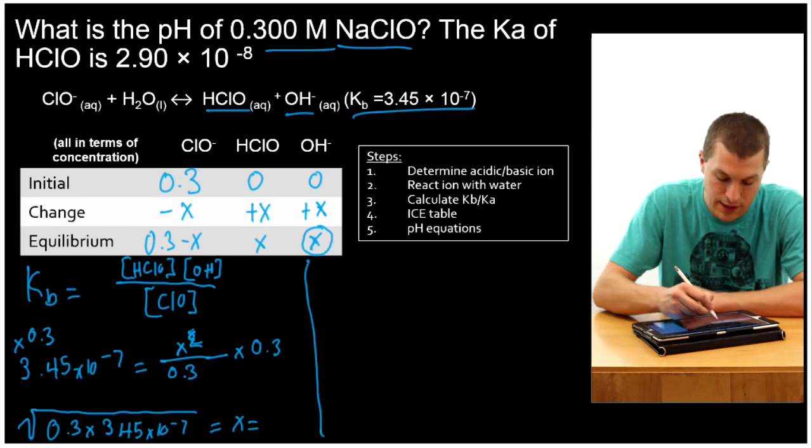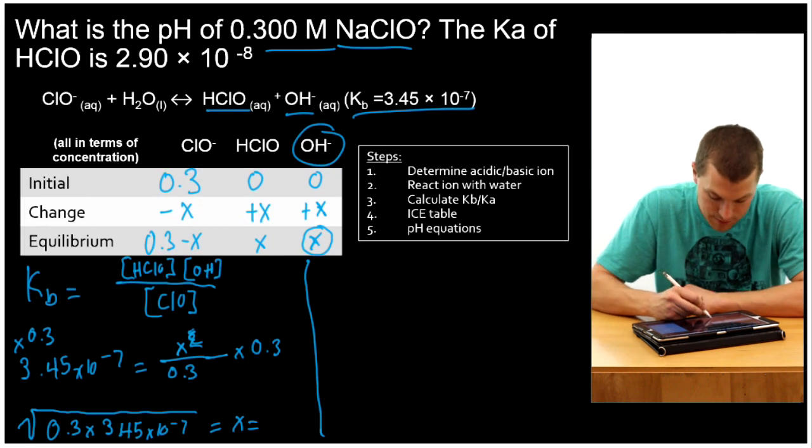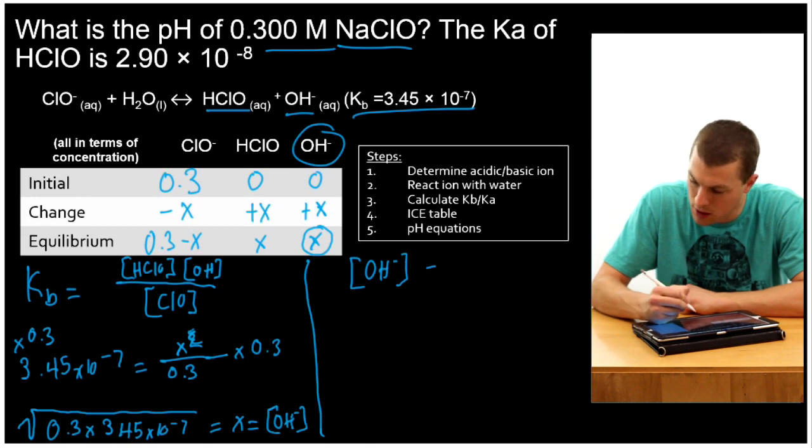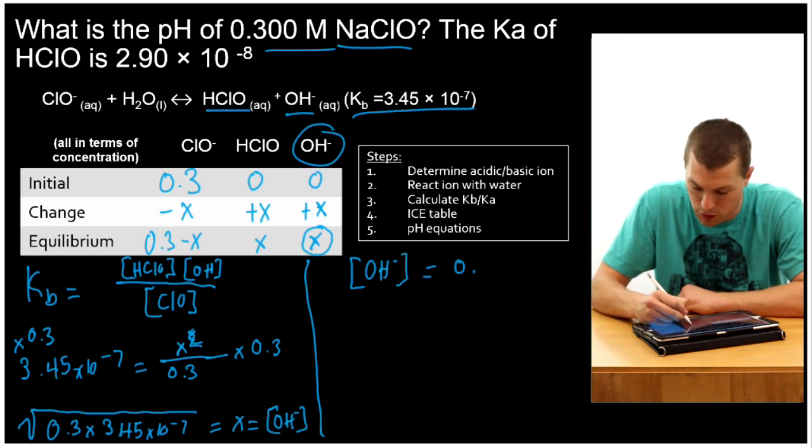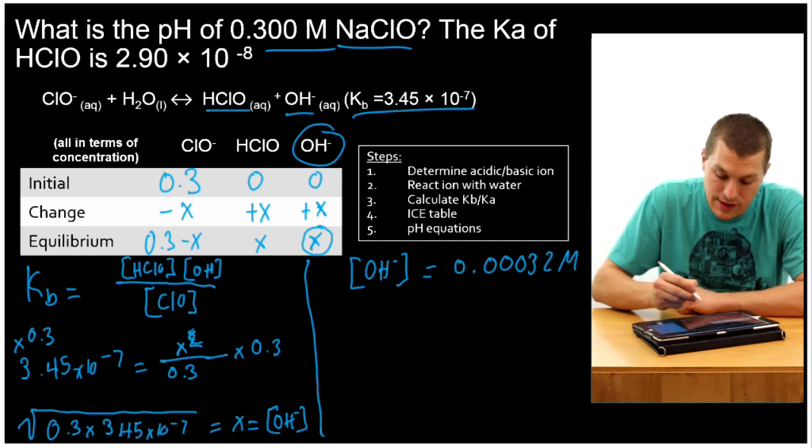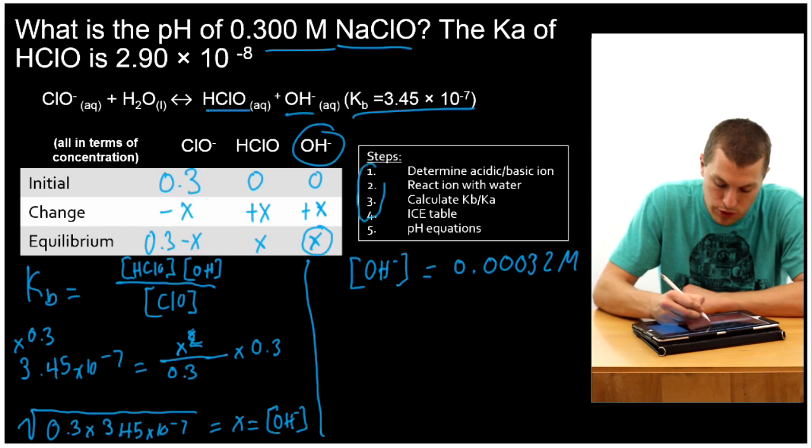What does that give us? So that gives us X, which we remember is the concentration of our hydroxide. What is that? Well, when we plug that into our calculator, we're going to get the concentration of our hydroxide ions is 0.00032 molar. So that was the ICE table. We've done all of our steps one through four.